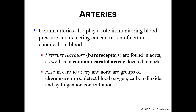Certain arteries play a role in monitoring blood pressure and detecting chemical concentrations in your blood. Pressure receptors called baroreceptors — baro meaning pressure — are found in your aorta and common carotid artery in your neck. These detect when blood pressure is too high or too low and send signals to your brain through feedback loops. Your carotid artery also has chemoreceptors that detect concentrations of substances such as oxygen, carbon dioxide, and hydrogen ions, triggering specific feedback loops when adjustment is needed.